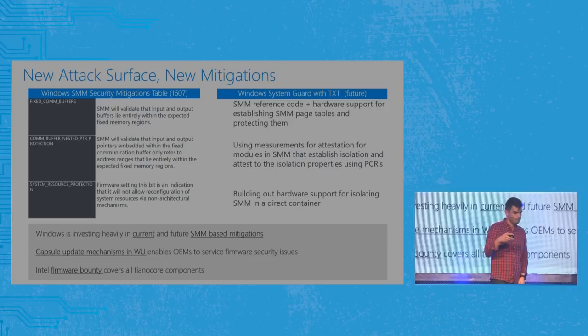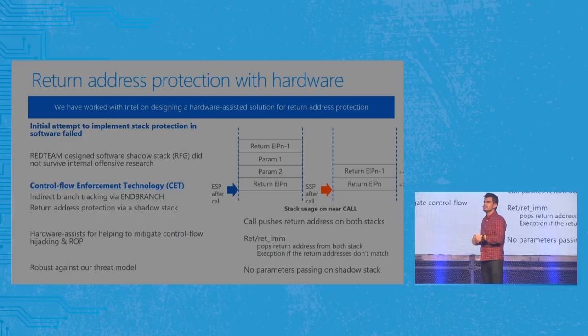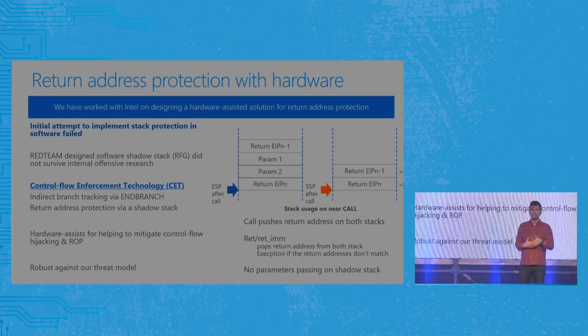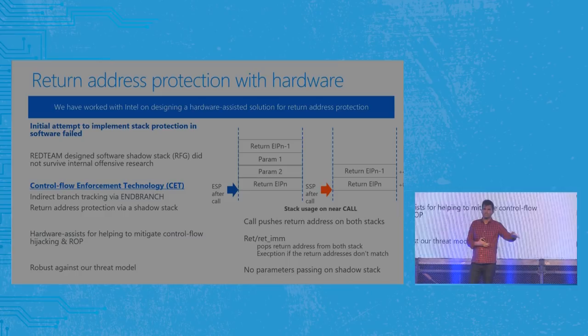Moving on — return address protection is the second part of control flow integrity. It's not just about protecting jumps and calls, it's also about protecting the stack. Attackers who want to evade CFG will just target the stack — they can make a ROP chain just as easily from corrupting the stack as from forward-edge integrity.